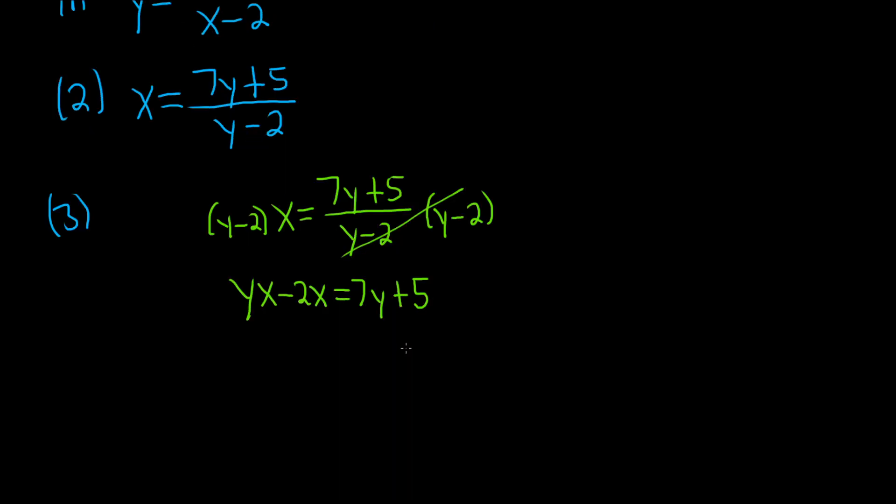Okay, we're looking for y. And we have y's on both sides. So the goal now is to get all of the y's on one side by themselves so that we can factor out a y. So let's do it in two steps. We'll start by adding 2x. So we have yx equals 7y plus 5 plus 2x.